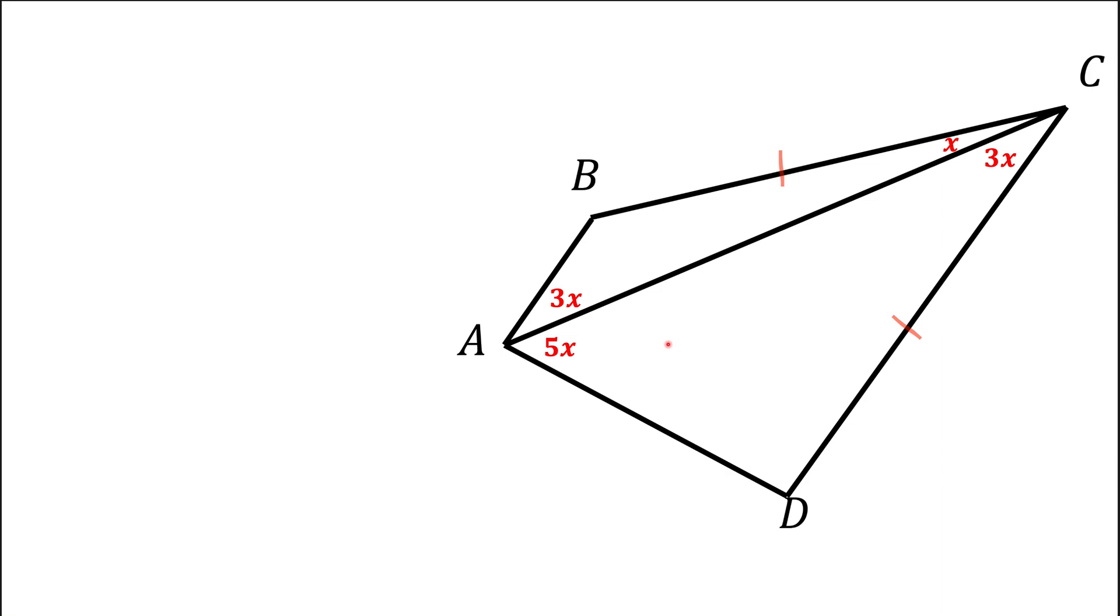Here we have a quadrilateral ABCD with diagonal AC shown here. We know the values of four angles up to a factor X, and we also know that side BC is the same length as side CD. We're asked to find that value of X.